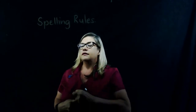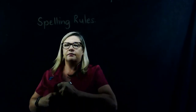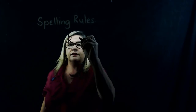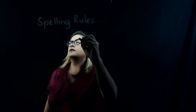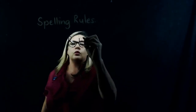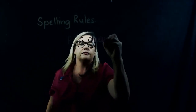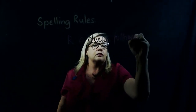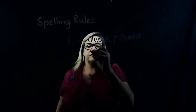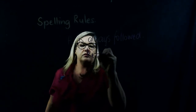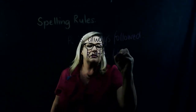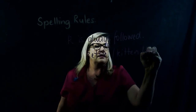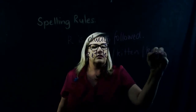The first spelling rule we learned this week is that K is always followed by a short vowel, such as kettle, kitten, key.